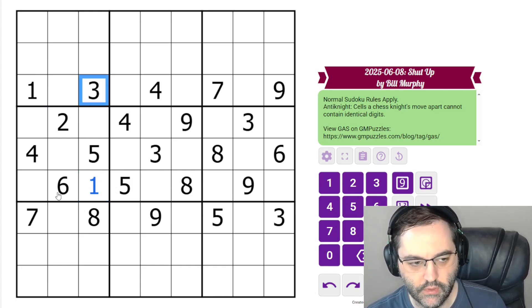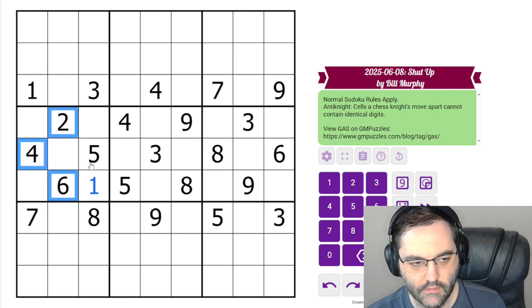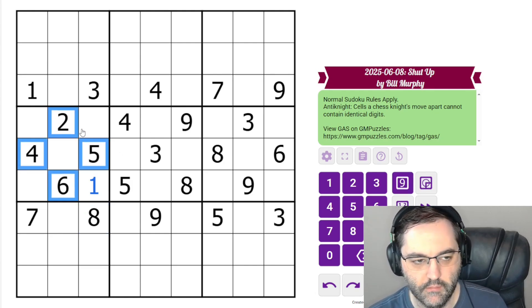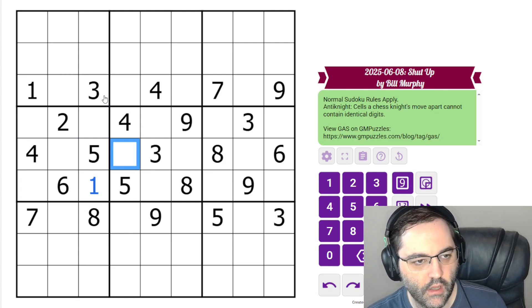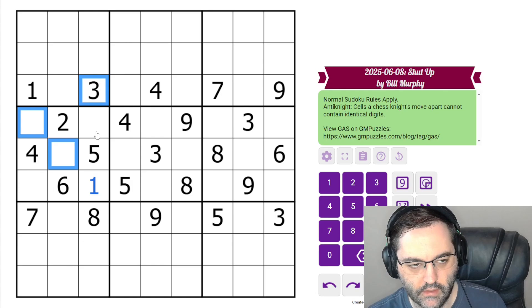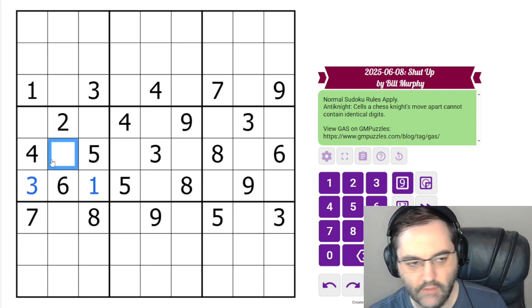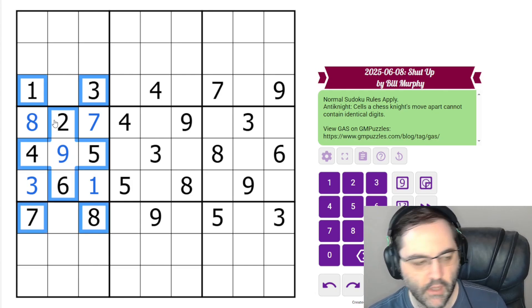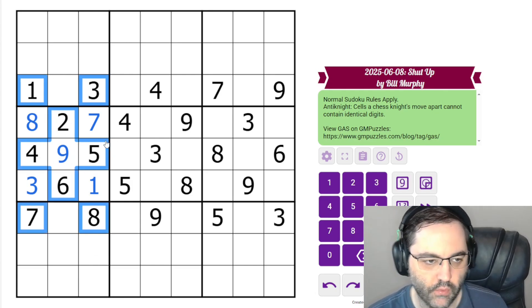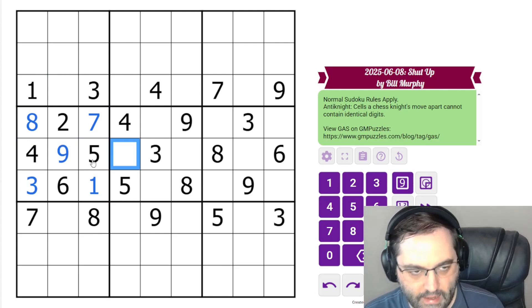We can do the same for three, seven, and eight, because those are four distinct digits from the digits that Bill gave us in the box. Three can't go in these cells by anti-knight for this cell in the column, so this is three. Seven can't go here or here, so this is seven. Eight can't go here, and that leaves nine.